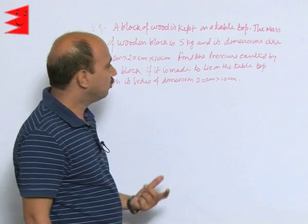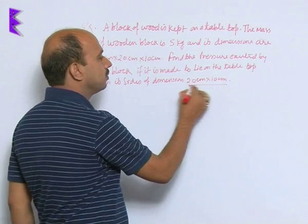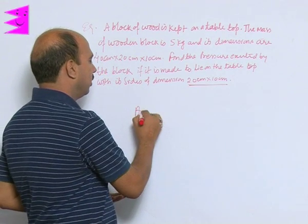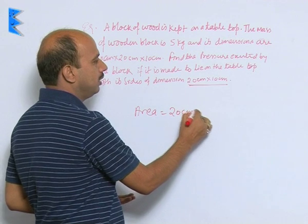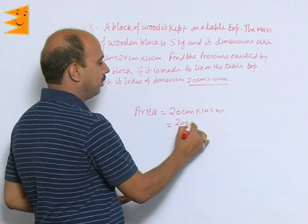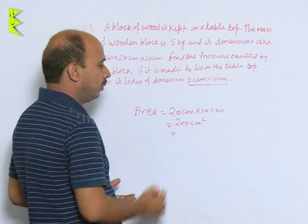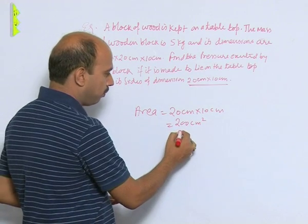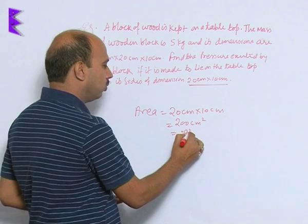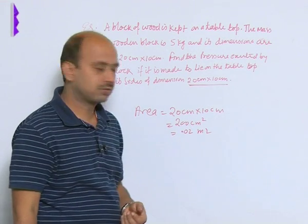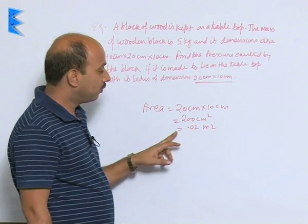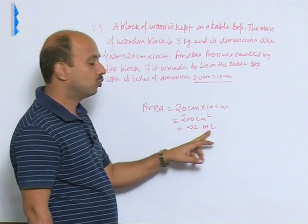We can take it this way. When this side is here, the area on the table top will be area equals 20 centimeter into 10 centimeter, that will be 200 centimeter square. We can convert into meter, so that will be 0.02 meter square.